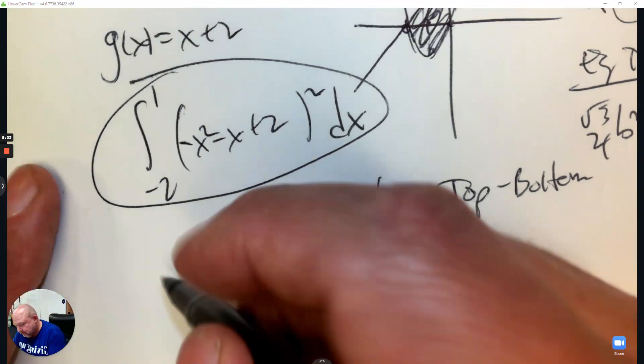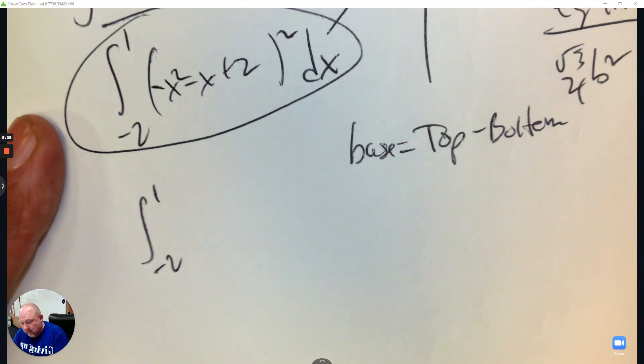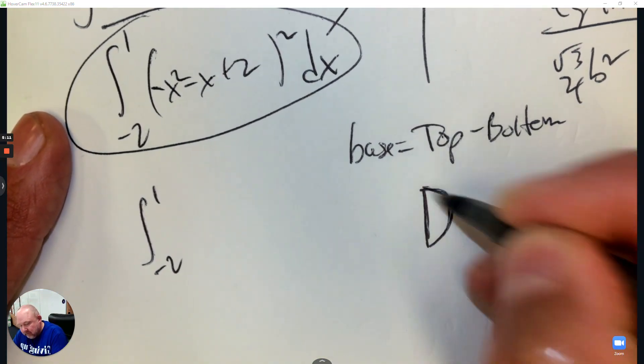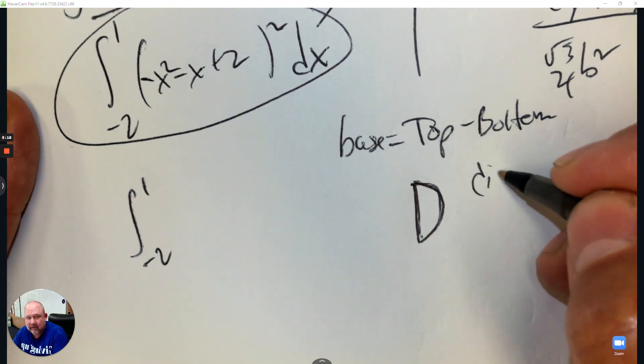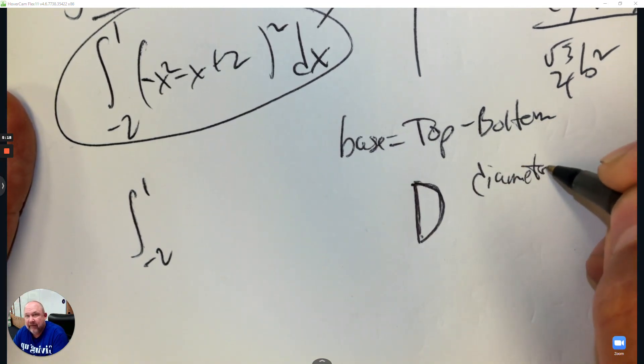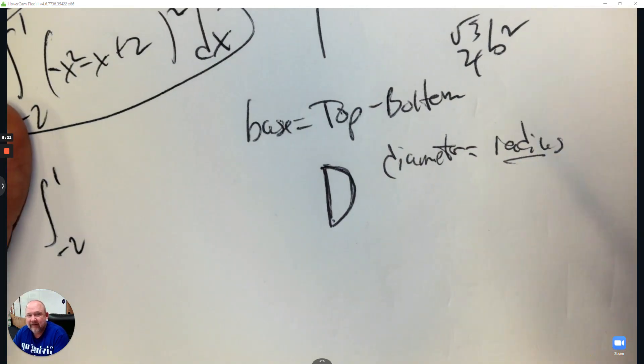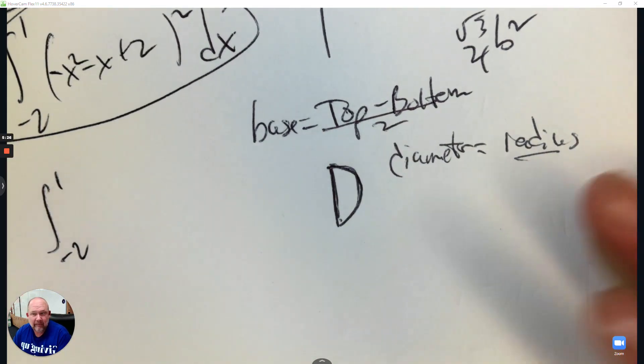Let's say it's a semicircle. So for a semicircle, we have the same setup. The base, in this case, is going to be, there's my semicircle. Well, the full base is actually the diameter. So for the formula for the area of a circle, I need the radius. So for the radius, I take this top subtract bottom and divide it by 2. And that would give me the radius.